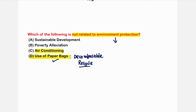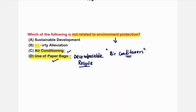Option C, air conditioning, is related to the environment because air conditioners consume a huge amount of electrical energy, which draws on natural resources used to generate electricity.